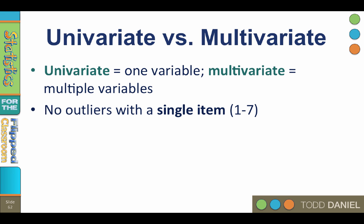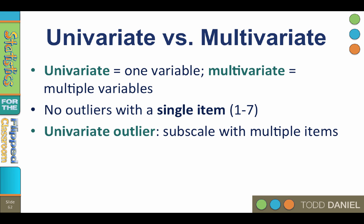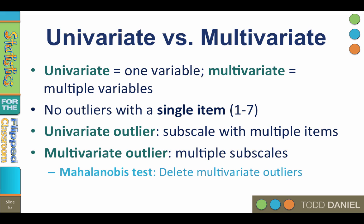If you use a Likert scale that runs from a minimum of 1 to a maximum of 7, you will not have outliers for a single item — the most any person could answer is 1 or 7, and those are both within the range of the data. When you combine multiple items into a single subscale — such as five similar questions about a personality trait like neuroticism — then a person who answered 7 on every question could be a univariate outlier. We measure variables with multiple items; combining those items is what creates the variable. When we analyze multiple subscales such as work satisfaction, intention to quit, and creativity scales all together, then we might have multivariate outliers.